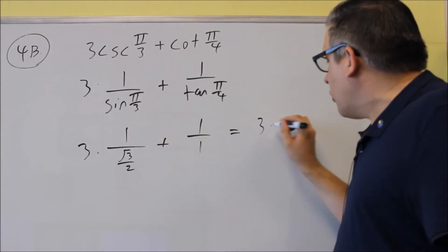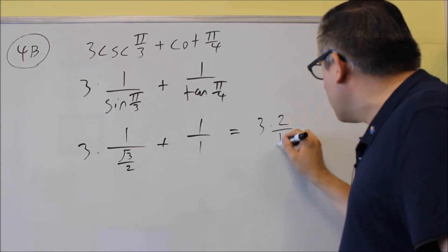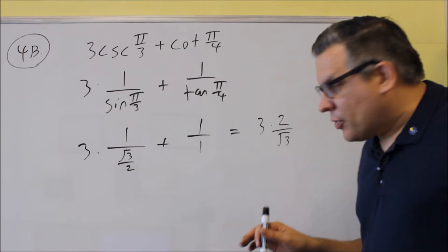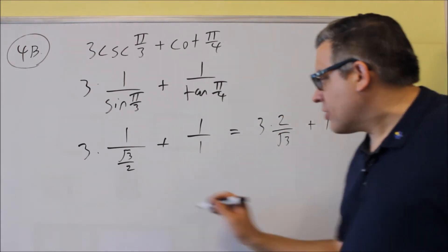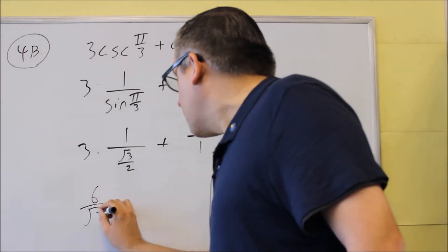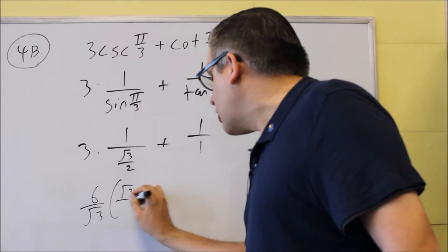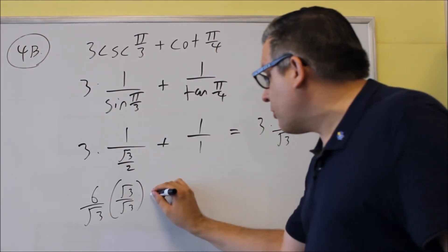Here, we're going to take 3, and we're going to multiply it by the reciprocal. So it's going to be 2 over the square root of 3. 1 divided by that, we flip and multiply. And then we have plus 1. Across the top, we have 6. So 6 over the square root of 3. Now that part can be rationalized, so we're going to multiply that by square root of 3 over square root of 3. We still have the plus 1 here.